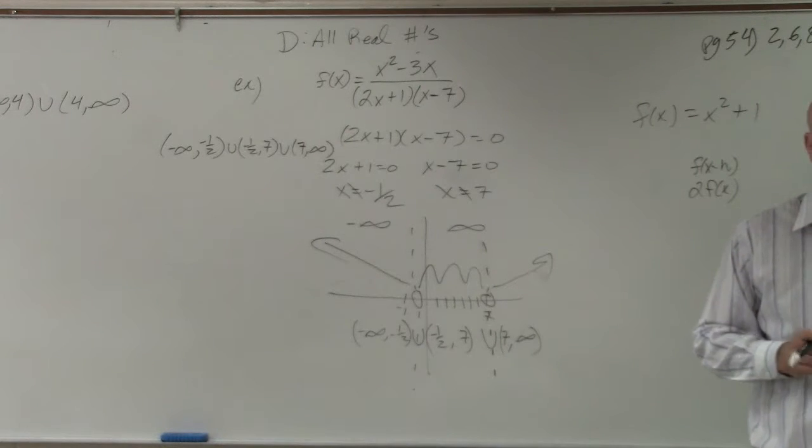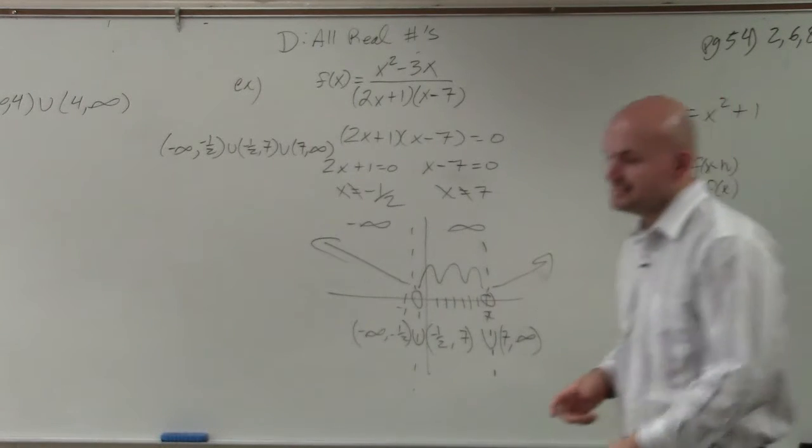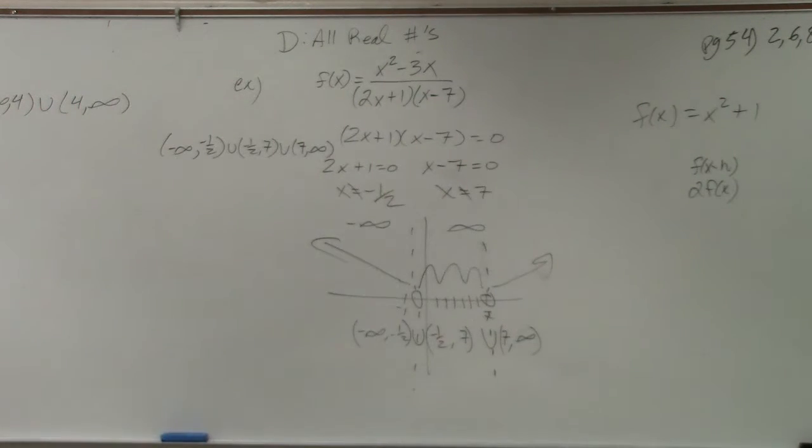Does everybody see that, kind of? Yes, no? Let's actually look at that. Let's look at that graph. Let me show you what it looks like. So that was x squared minus 3x. And this is 2x plus 1 times x minus 7.